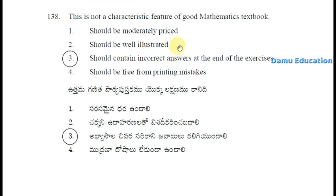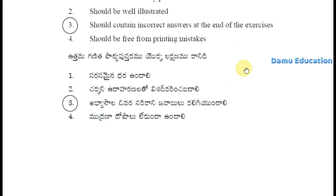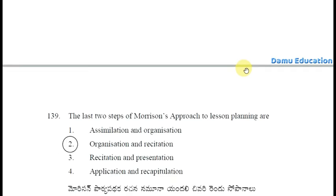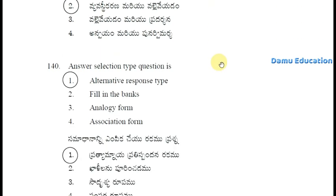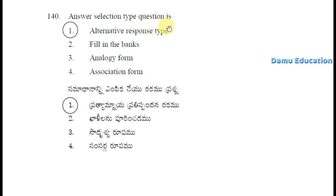This is not a characteristic feature of a good mathematics textbook — it should not contain incorrect answers at the end of the exercises. The last two steps of Morrison's approach to lesson planning are organization and recitation. The answer selection type question is alternative response type.